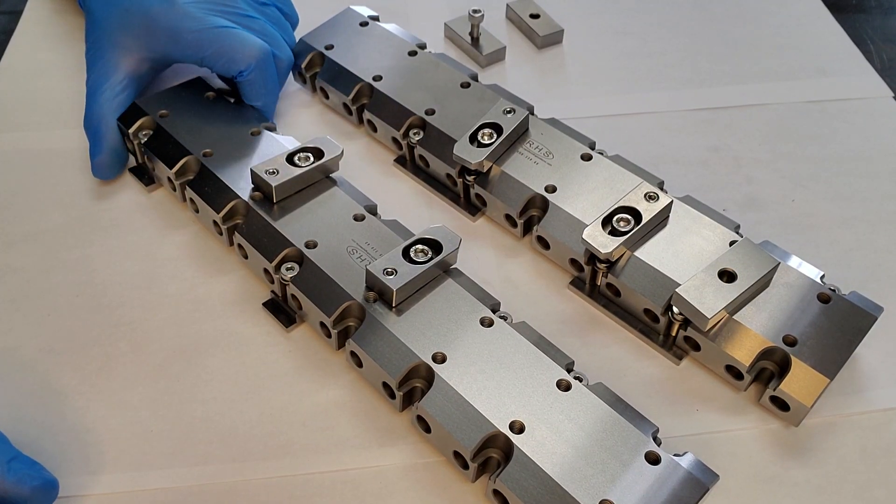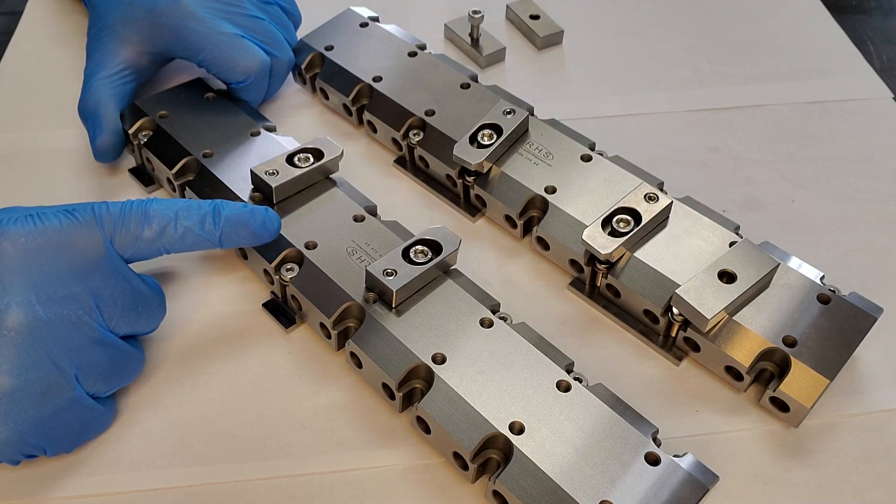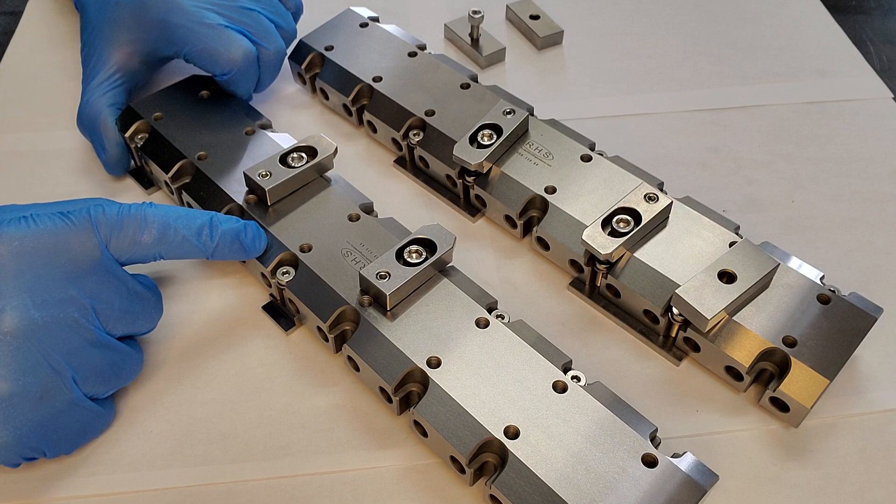Hello, this is Ralph from Rapid Holding Systems again. What we have here today is the RHS 320.6. They're wire EDM clamping beams.